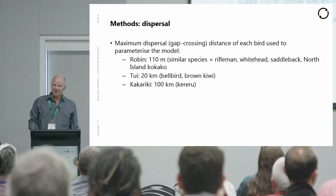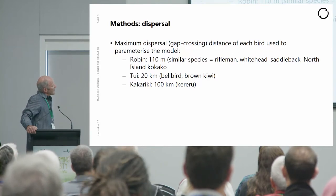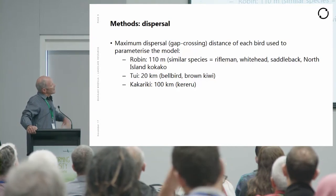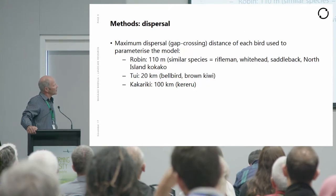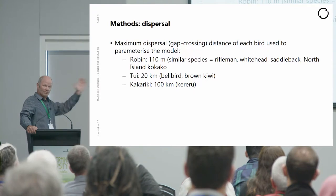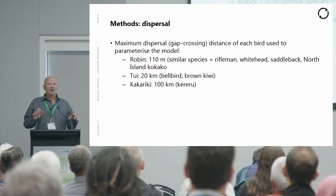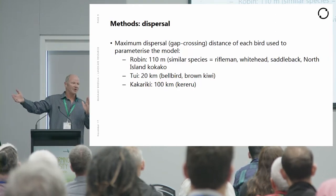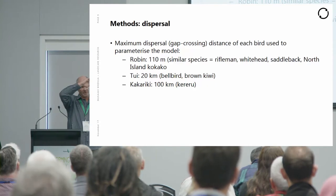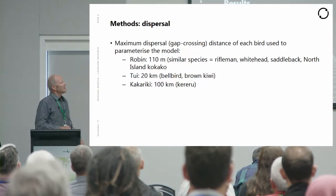Dispersal distances are based on the literature and expert opinion. There are big differences between species: Robin have a maximum recorded movement of only 110 metres — similar species include Rifleman, Whitehead, Saddleback, and North Island Kokako. Tui can move up to 20 kilometres, similar to Bellbird and Kiwi. Kakariki can range right across the landscape. A probability function was used rather than just maximum distance, specifically a greater than 50% probability of an animal crossing a particular set of patches.